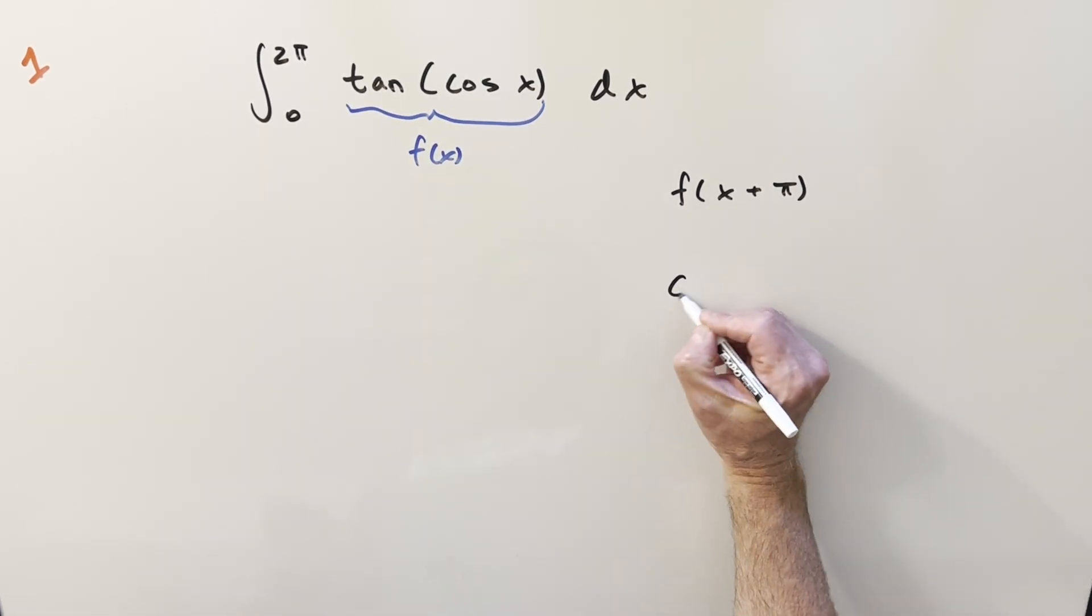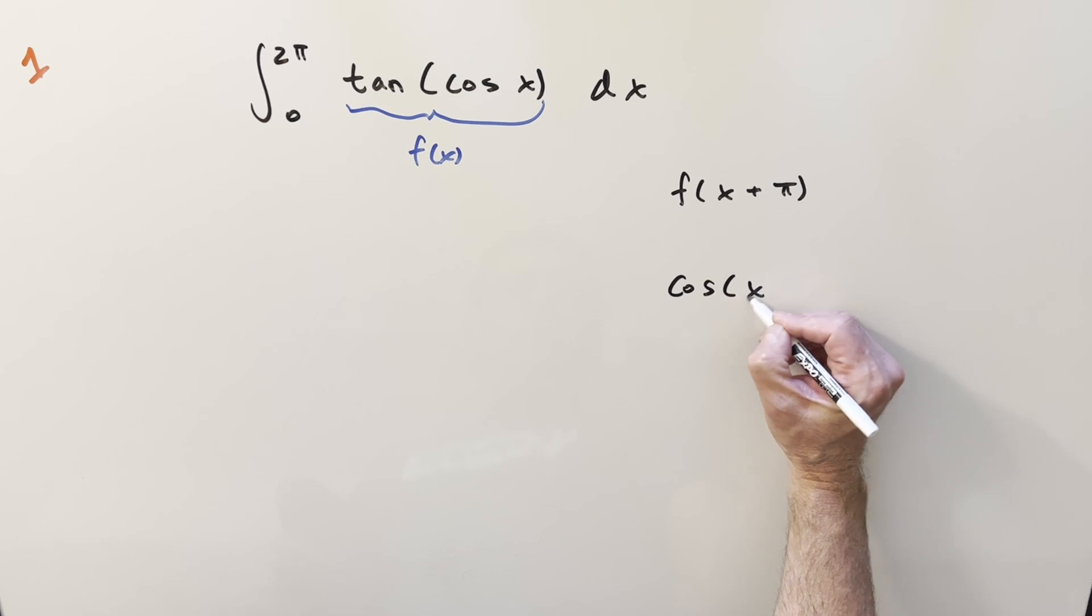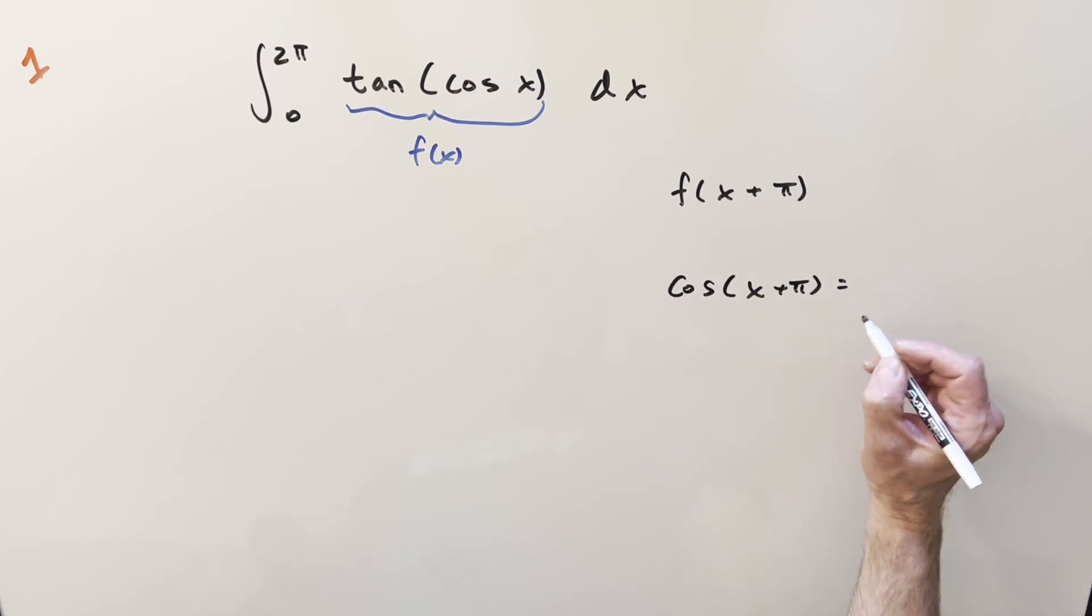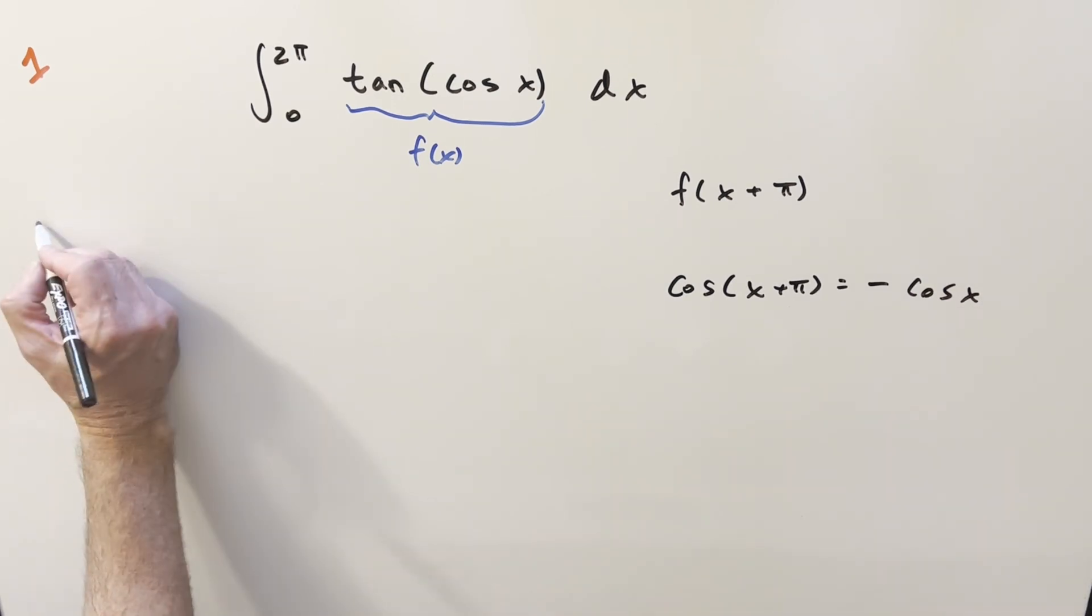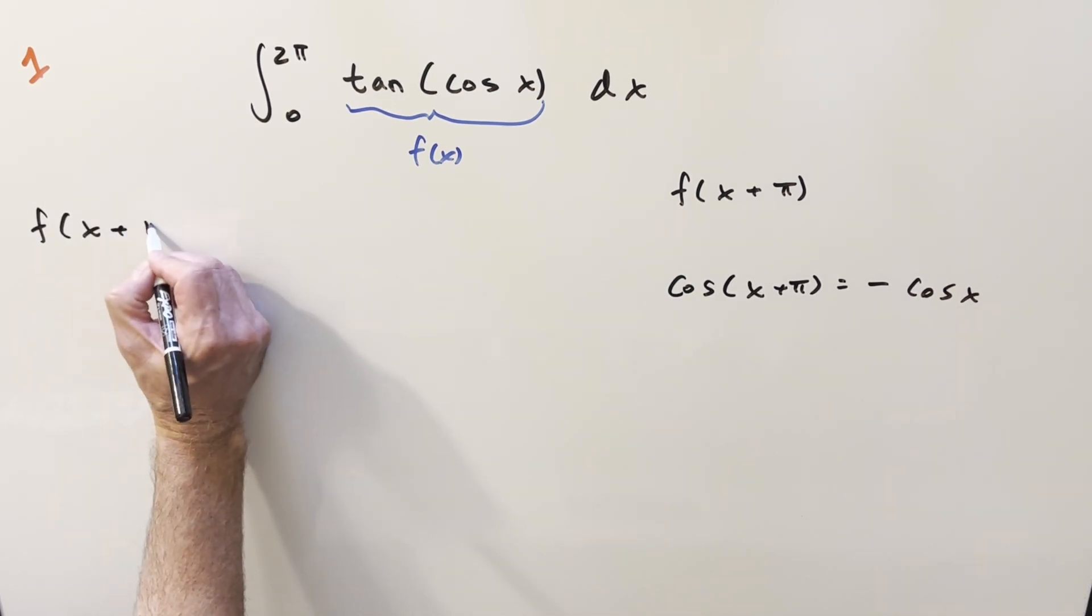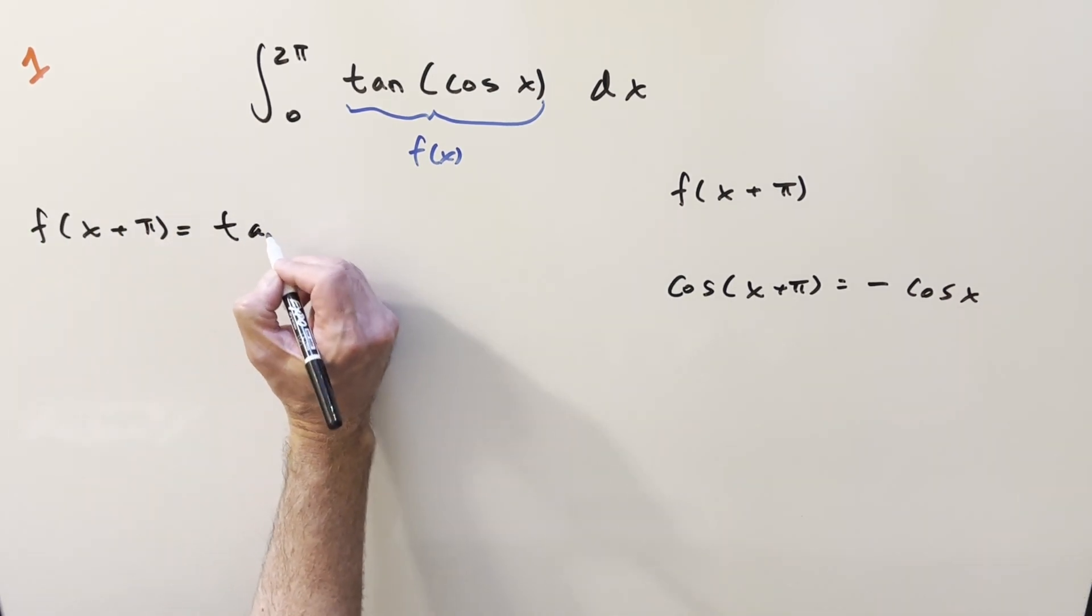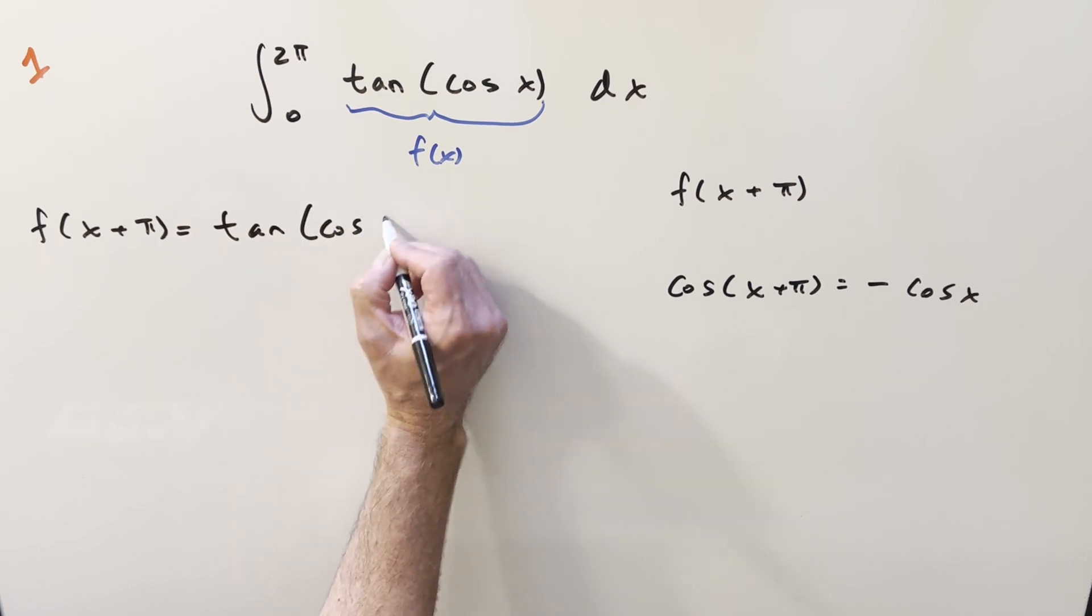And for this one, it's really useful to know a couple of trig identities. So for cosine x plus pi, this is just going to be the same thing as minus cosine x. So doing our check for f of x plus pi, we have just tan of cosine x plus pi.